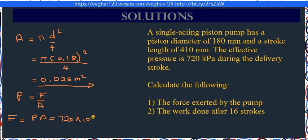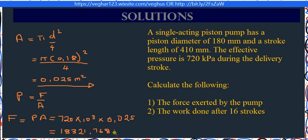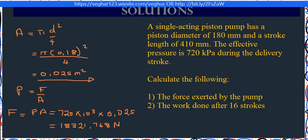Calculating the force using the pressure equation F = P × A, the pressure is 720 times 10 to the power of 3, multiplied by the area of 0.025. This gives us a force of 18,321.768 Newtons.